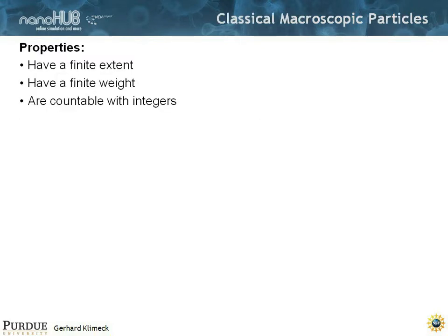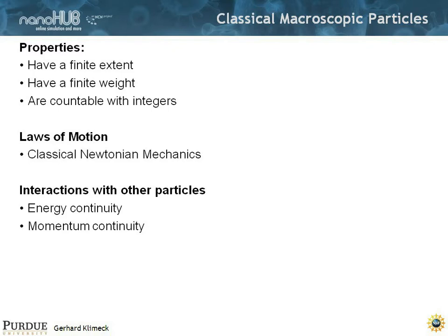Let's talk about classical macroscopic particles. They have properties we all know and love. They have a finite extent, they have a finite weight, and they're countable with integers. That's generally how we think about classical particles. And they behave with classical Newtonian motions, which is the first thing you learn in physics. They interact with other particles by energy conservation and momentum conservation. Those are two fundamental conservation laws which you learn when you study physics.